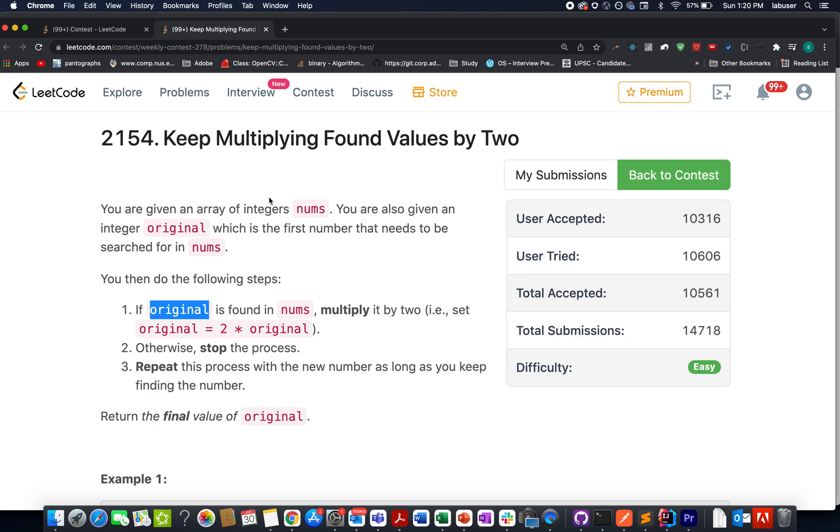Here in this question we are given an array of integers and another integer named original. There are few steps up till which the original gets updated. Let's walk through those steps. If original is found in nums, then we multiply it by two, otherwise we stop the process. We keep on doing the same process and the original keeps on getting updated as long as you are able to find that element in your nums array. We need to return the final value of the original that has been updated in the last.